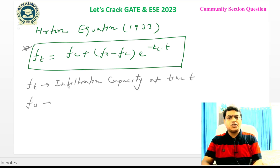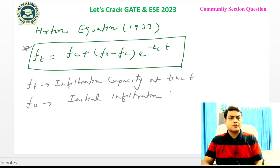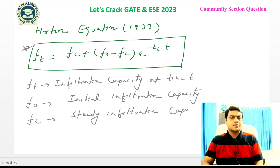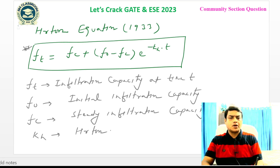F0 is the initial infiltration capacity. Fc is the steady or constant infiltration capacity. Kh is the Horton decay coefficient.